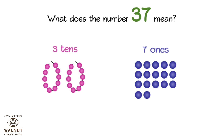what happens? One ten becomes ten ones. We are left with two tens and we have 17 ones. So the number is still 37 — we have just split it differently.